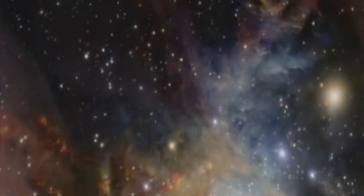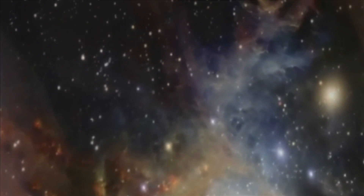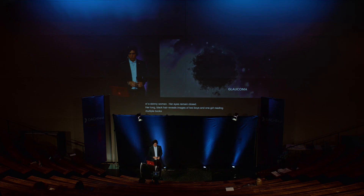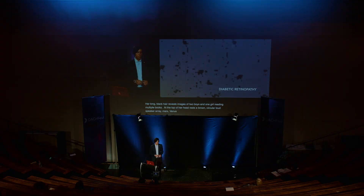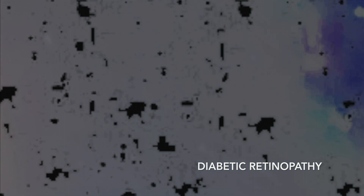A black screen slowly fades into dark blue and purple interstellar clouds that slowly rest on the deep black universe. A black and grey image of a skinny woman in her late twenties with large lips and a slim face slowly appears into the cosmos, whilst her eyes remain closed. Her long black hair reveals images of two boys and one girl reading multiple books. At the top of her head rests a brown circular loudspeaker array in which Mars, Venus, Pluto, and a spaceship slowly navigate into its silhouette. From the top, the light grey moon slowly approaches, revealing a title on black. Films Unseen. The woman's eyes abruptly open as the slide breaks into hexagonal figures fading into black.